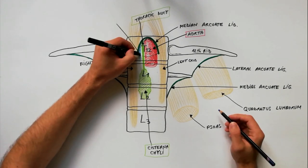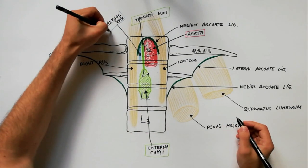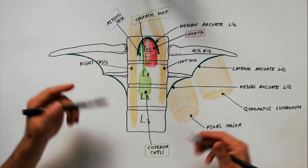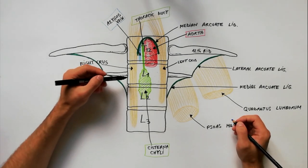Sometimes the azigos vein also passes through aortic hiatus. When it does not pass through aortic hiatus, the azigos vein passes through the substance of the right crus of the diaphragm.